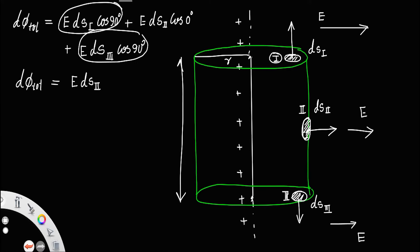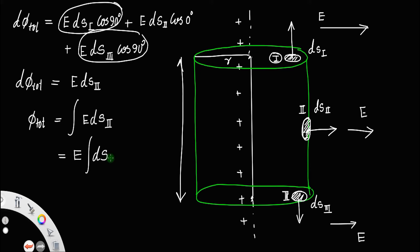To get the total flux, integrate E·ds2. Since the radius remains the same, the electric field at the curved surface is constant, so phi_total equals E times the integral of ds2. Integrating ds2 gives the curved surface area of the cylinder: 2πrL, where L is the length and r is the radius. So phi_total equals E·2πrL. This is equation number 1.